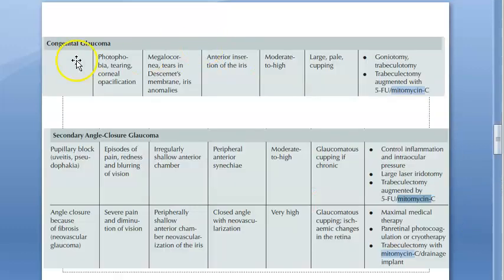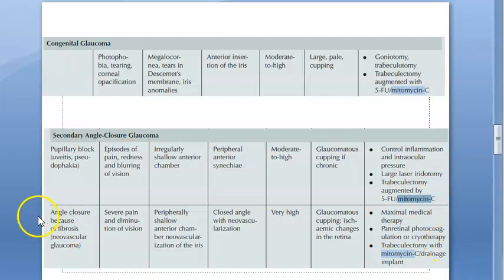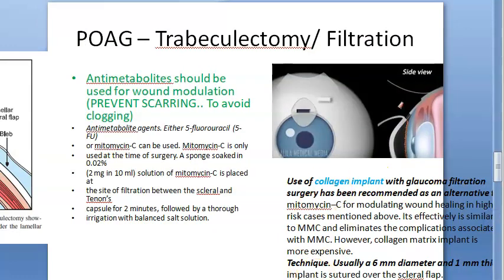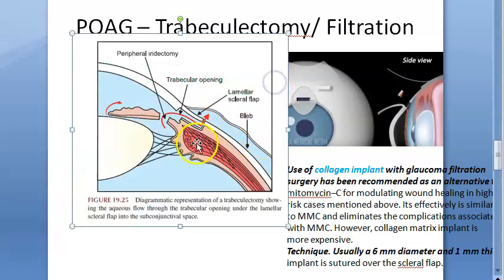In glaucoma, Mitomycin C is used along with 5-FU in congenital glaucoma for trabeculectomy. It is also used in secondary angle closure glaucoma (pupillary block) for trabeculectomy, and various other types of glaucoma. The focus in glaucoma surgery is trabeculectomy, where a new drainage path is created for aqueous humor to drain into the subconjunctival space.